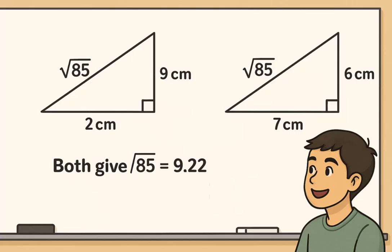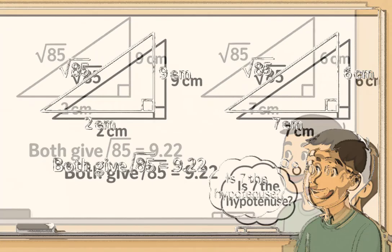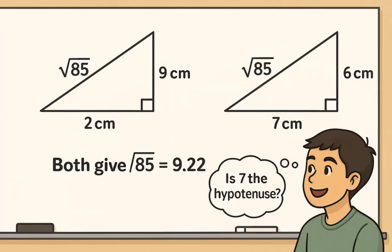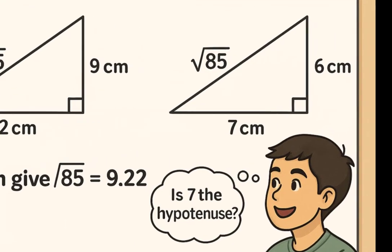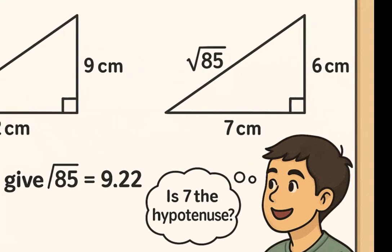But here's the key. The question only tells us two of the sides. It does not say that these are the two legs. One of the given sides could actually be the hypotenuse itself.